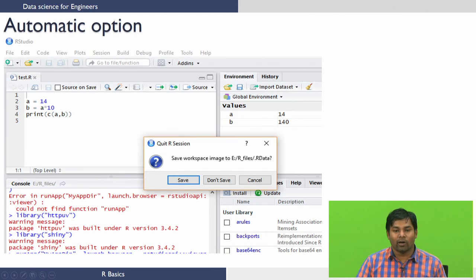The first one is the automatic option. When you close the R studio application, it will ask you, 'Do you want to save the workspace image?' If you say yes, it will save all the variables that are there in the workspace. If you say do not save, R studio will exit and the workspace information will not be saved.